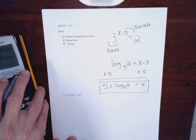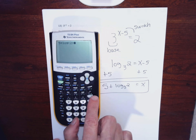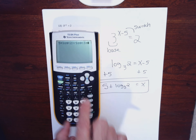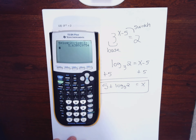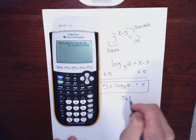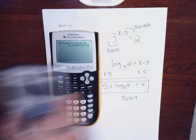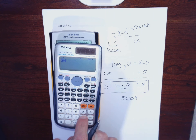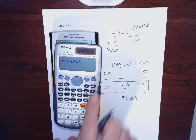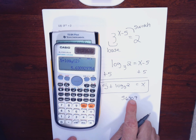Let me do this on the calculator: 5 plus log of 2 divided by log of 3 gives me 5.6309. On the better calculator, 5 plus log base 3 of 2 still gives 5.6309.